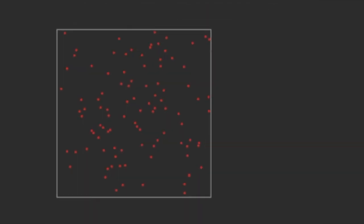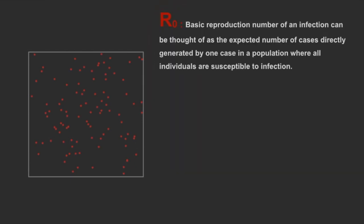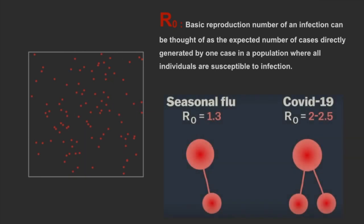We can understand how infectious a disease is using the R0 or basic reproductive number. This predicts how many additional people one person could get sick in a population with no immunity to the disease. An R0 smaller than 1 means the outbreak will die out, while greater than 1 is always exponential. COVID-19 has an R0 between 2 and 3. This explains why the number of cases has grown so rapidly.